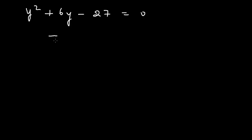Then it equals plus 9Y minus 3Y. Here we have minus 27 equals 0.